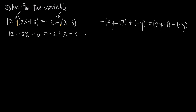Now that we've removed our parentheses, we just need to simplify both sides of our equation by combining like terms. On the left-hand side, 12 and negative 5 are like terms, so 12 minus 5 gives us 7, and we'll leave the negative 2x. On the right, we have like terms of negative 2 and negative 3 — they're both whole numbers — so negative 2 minus 3 gives us negative 5, leaving us with negative 5 plus x.